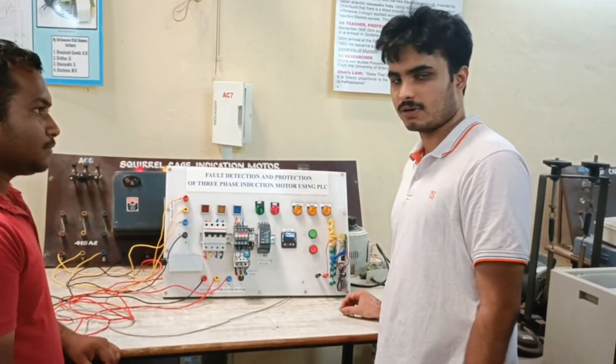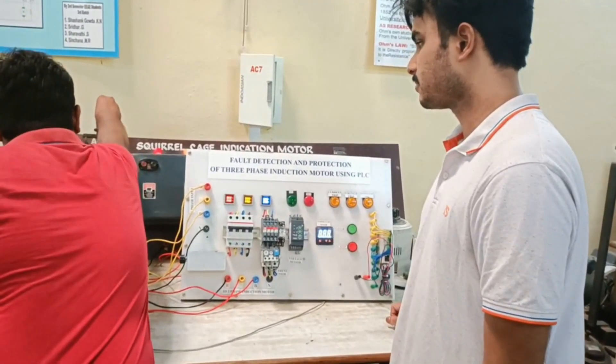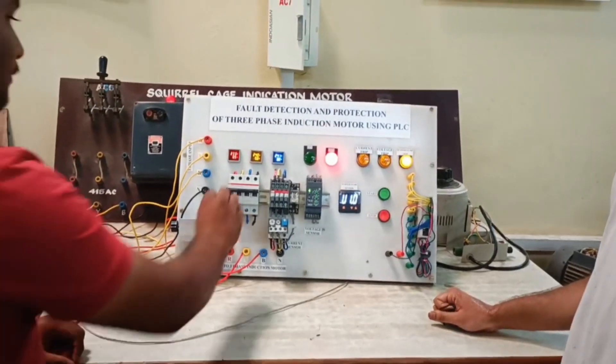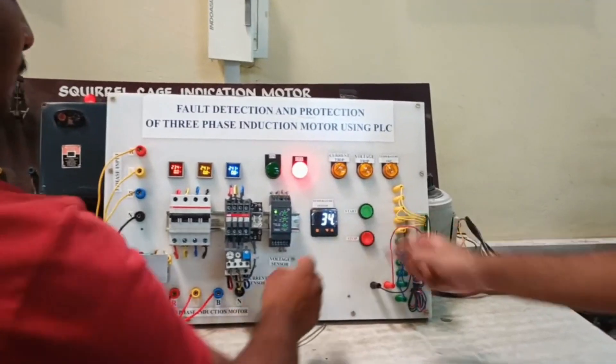Now we are demonstrating a voltage fault. So first we have to switch on the supply and the MCB. And to start we have to push the start button.